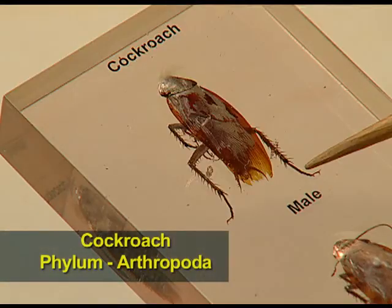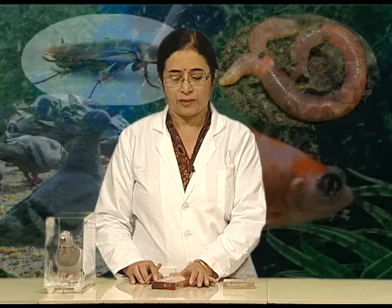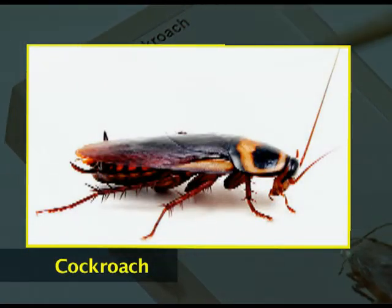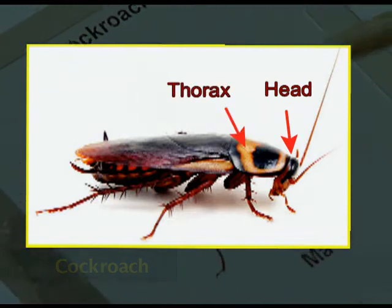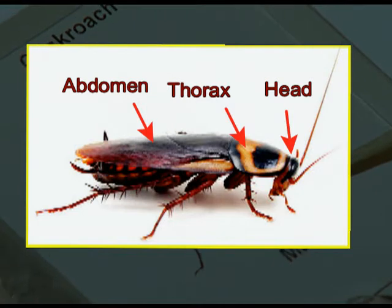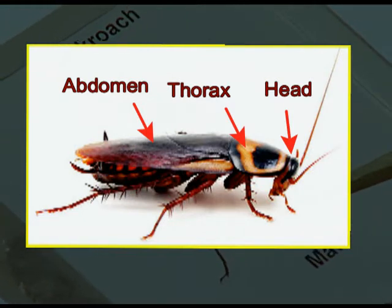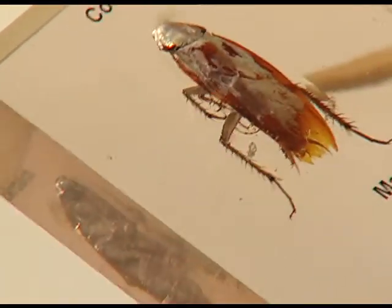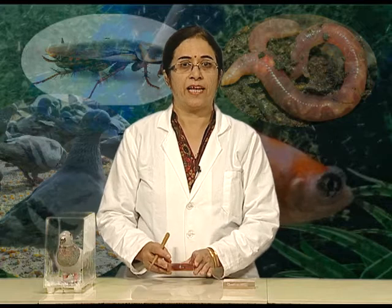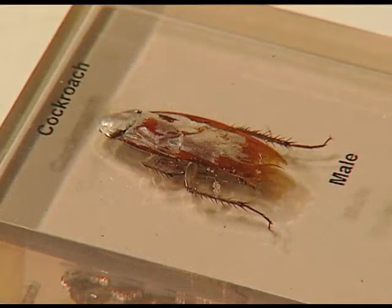The second example is cockroach, which belongs to phylum Arthropoda and class Insecta. It is characterized by jointed feet and a segmented body. The body is divided into head, thorax, and abdomen. It is covered by chitinous appendages and the circulatory system is open. Sexes are separate.